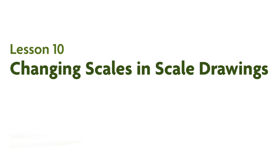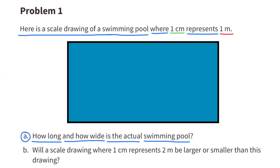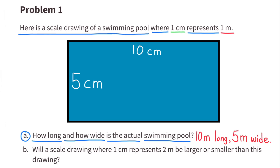7th grade unit 1 lesson 10, changing scales in scale drawings. Number one: here is a scale drawing of a swimming pool where one centimeter represents one meter. How long and how wide is the actual swimming pool? The scale drawing is 10 centimeters long and 5 centimeters wide, so the actual swimming pool would be 10 meters long and 5 meters wide.